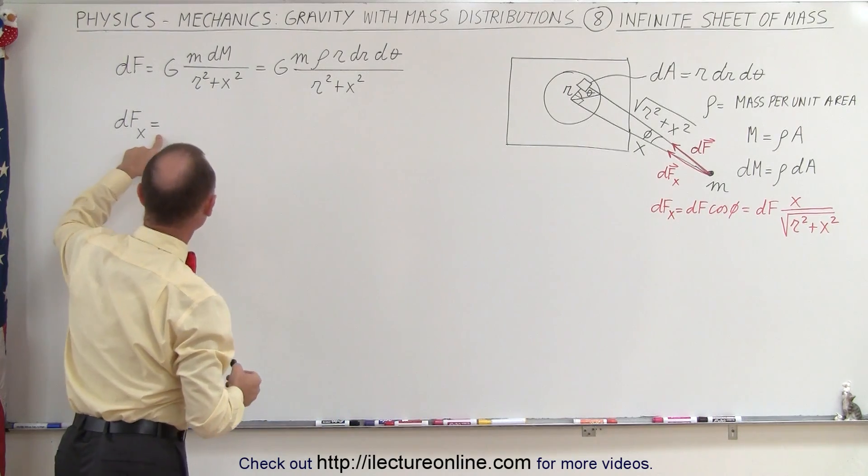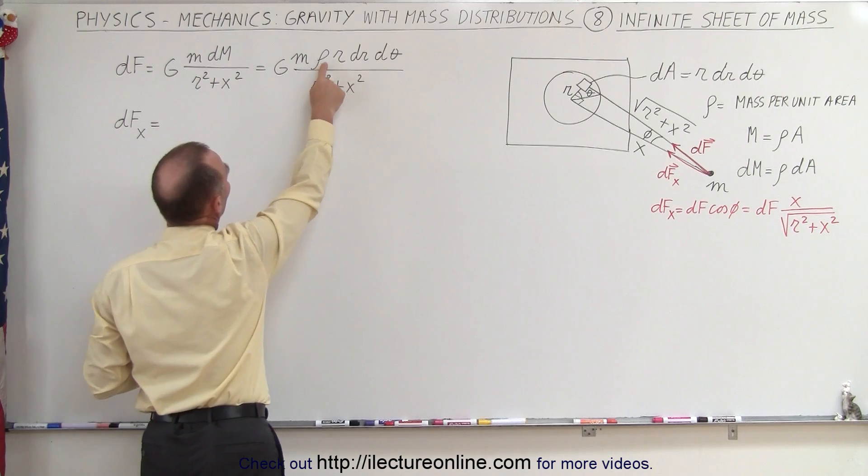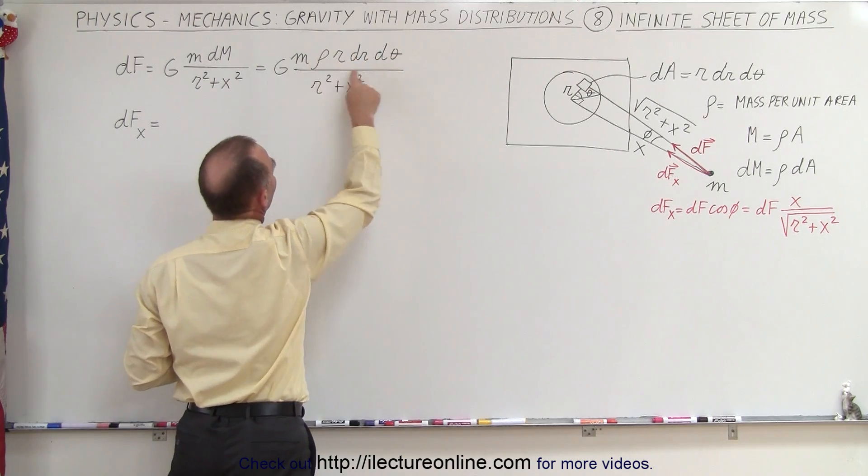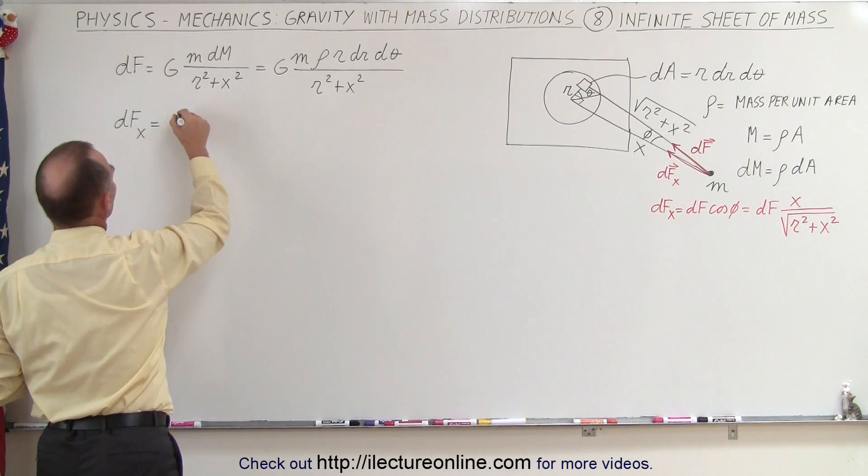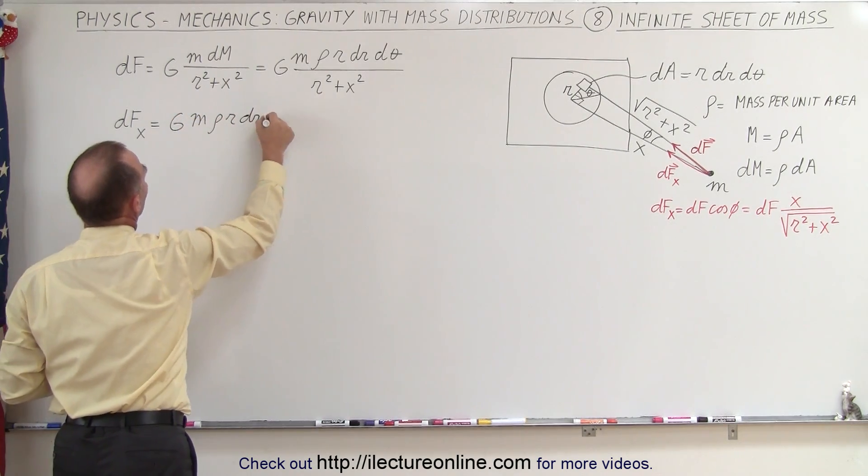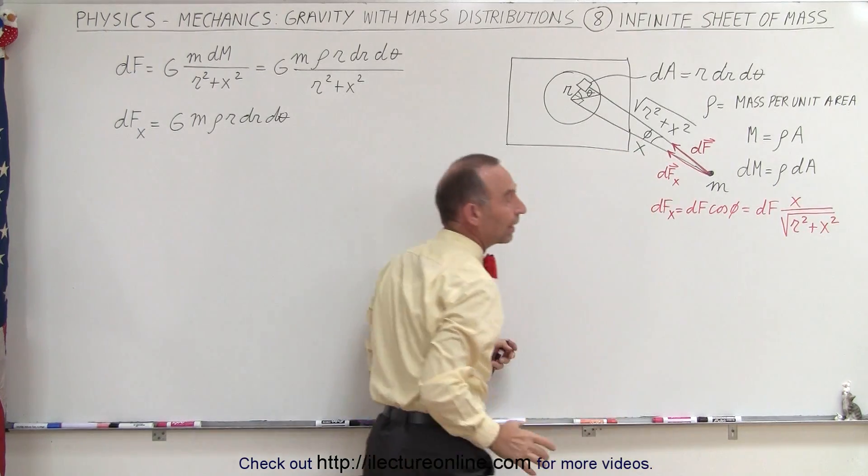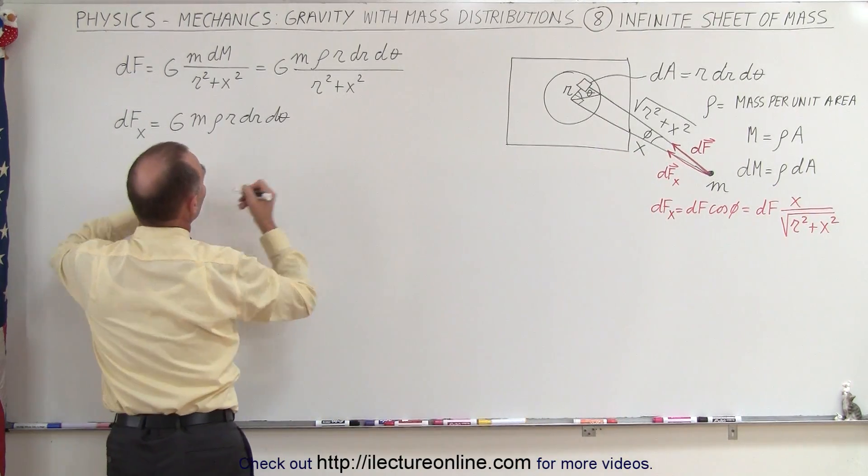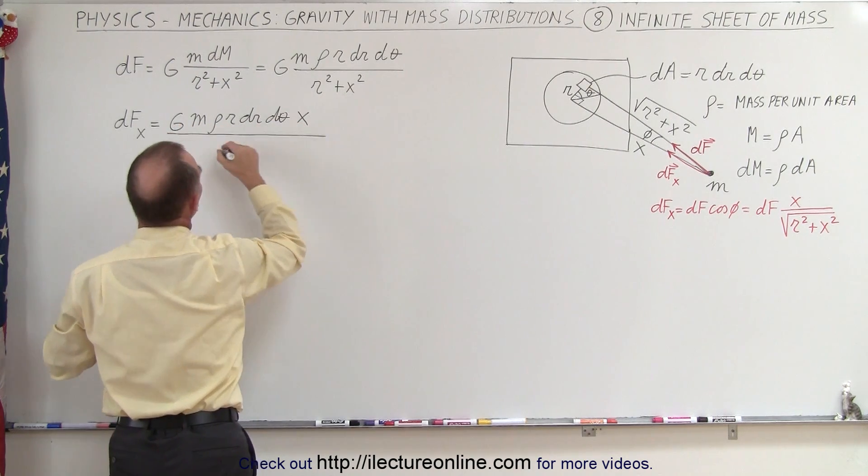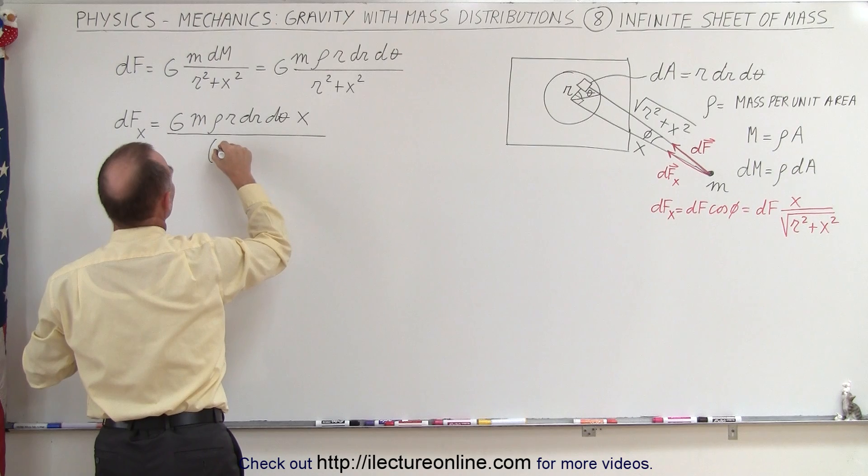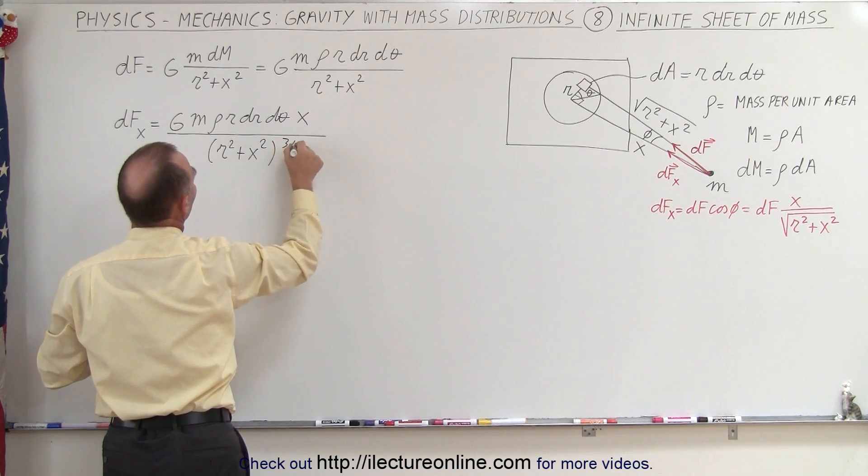So we're going to now establish what dF x is. Notice we replace dm by rho r dr d theta, which is the mass of the small area element. And then here we're going to write g. And now we're going to also multiply times x divided by the square root of that. So that means we're going to end up with an x up here. And in the denominator, we're going to end up with this quantity raised to the 3 halves power. R squared plus x squared to the 3 halves power.